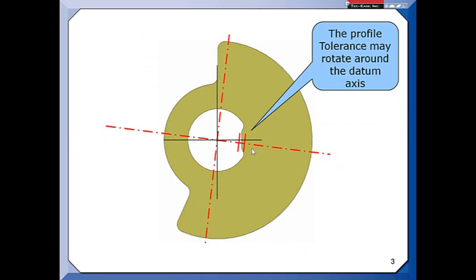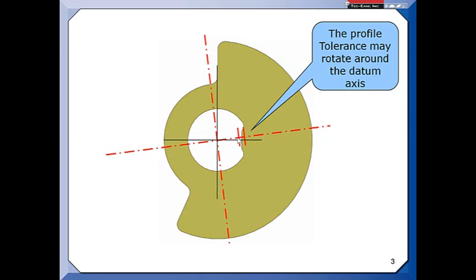What we would do is we would have to rock or rotate those datum planes with the profile zone until we could bring this feature into that tolerance.